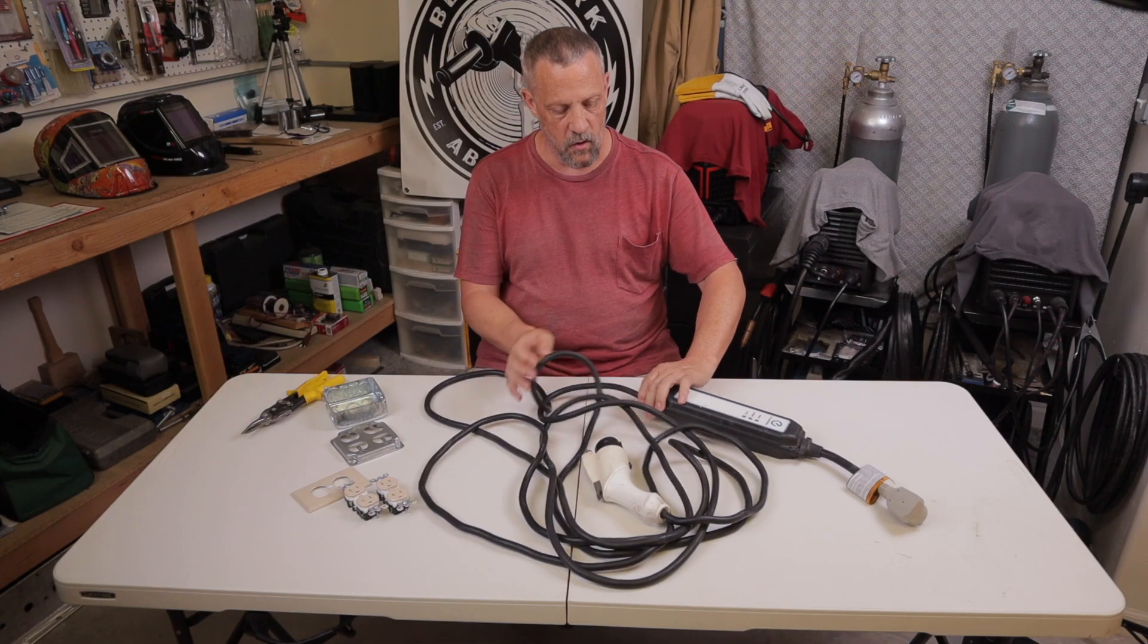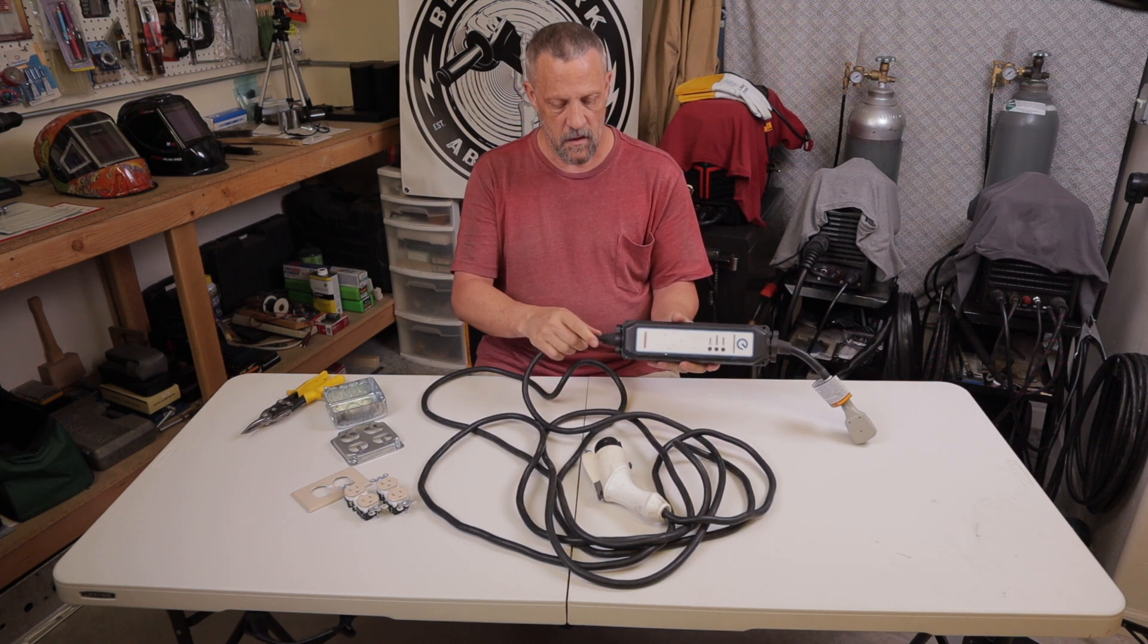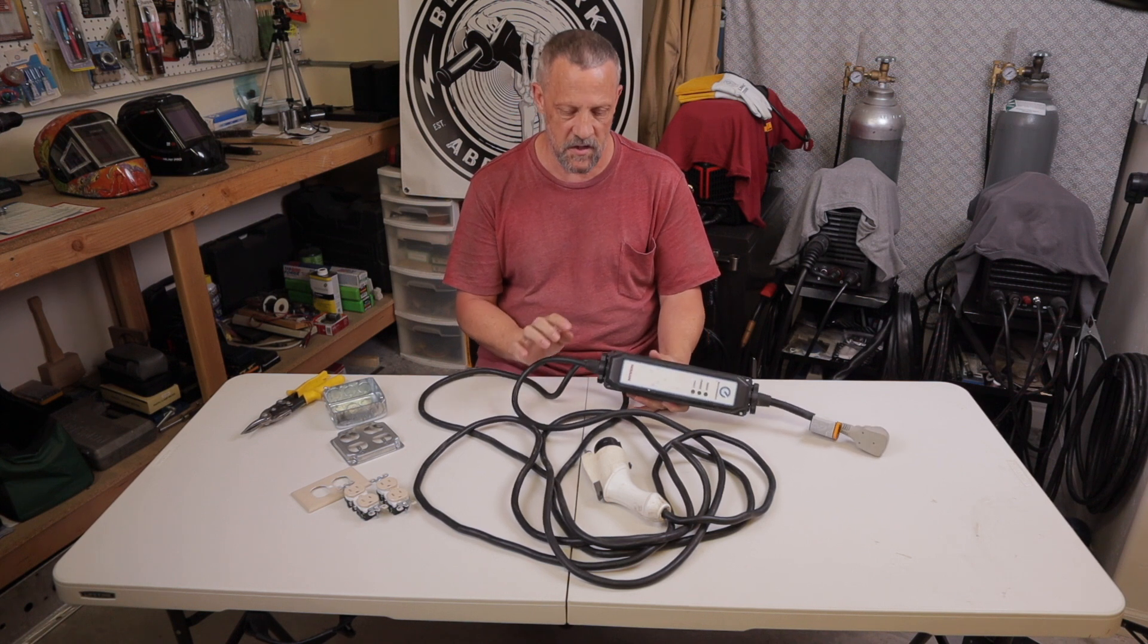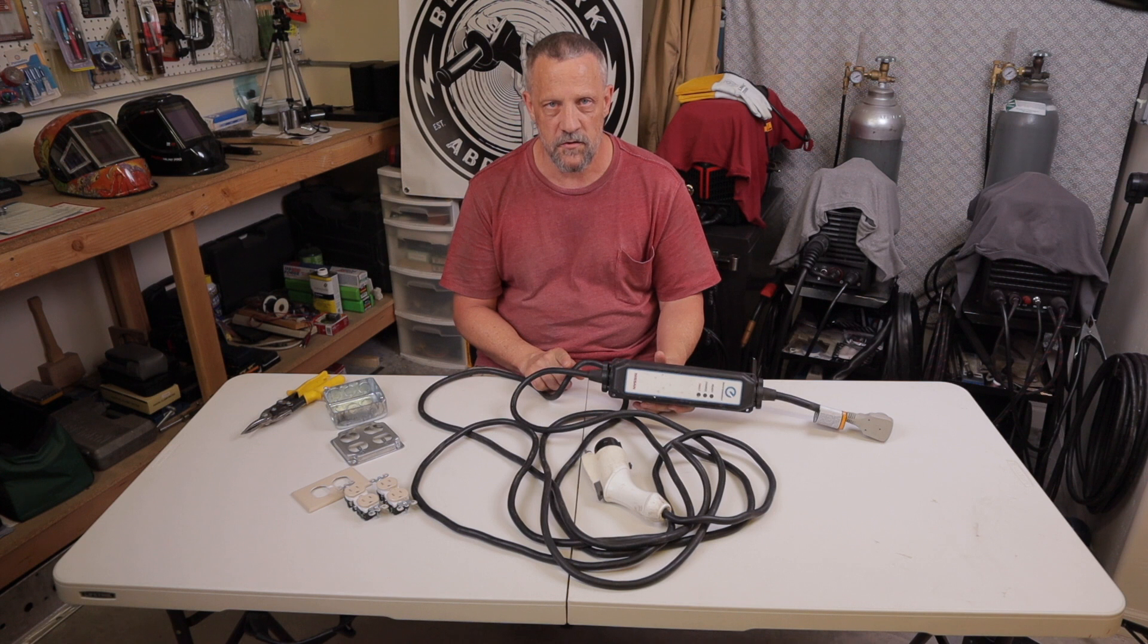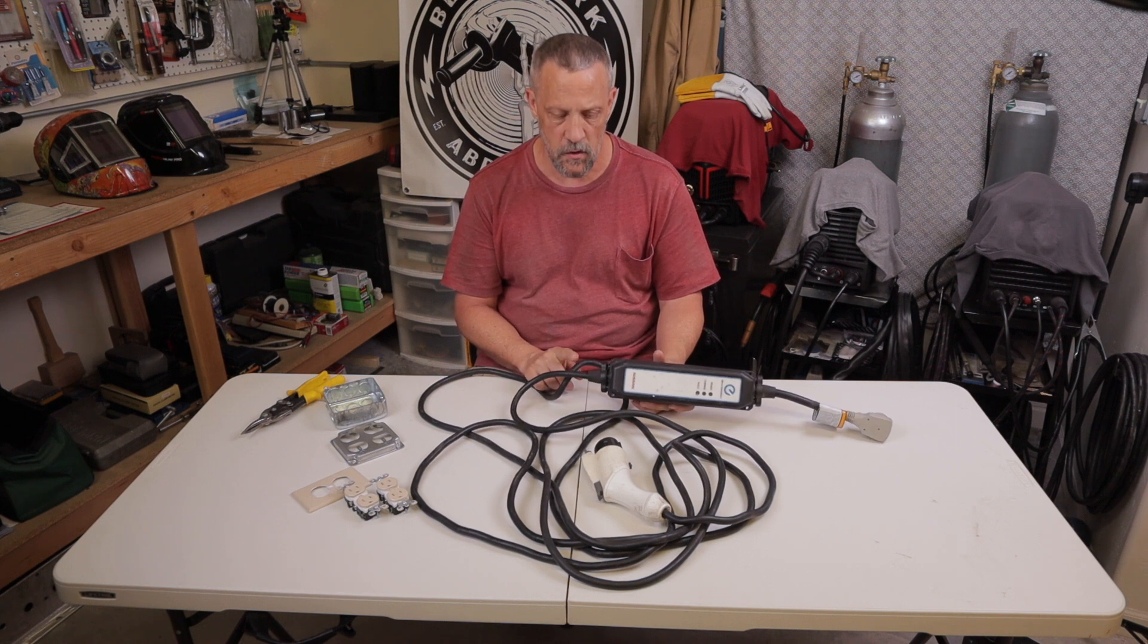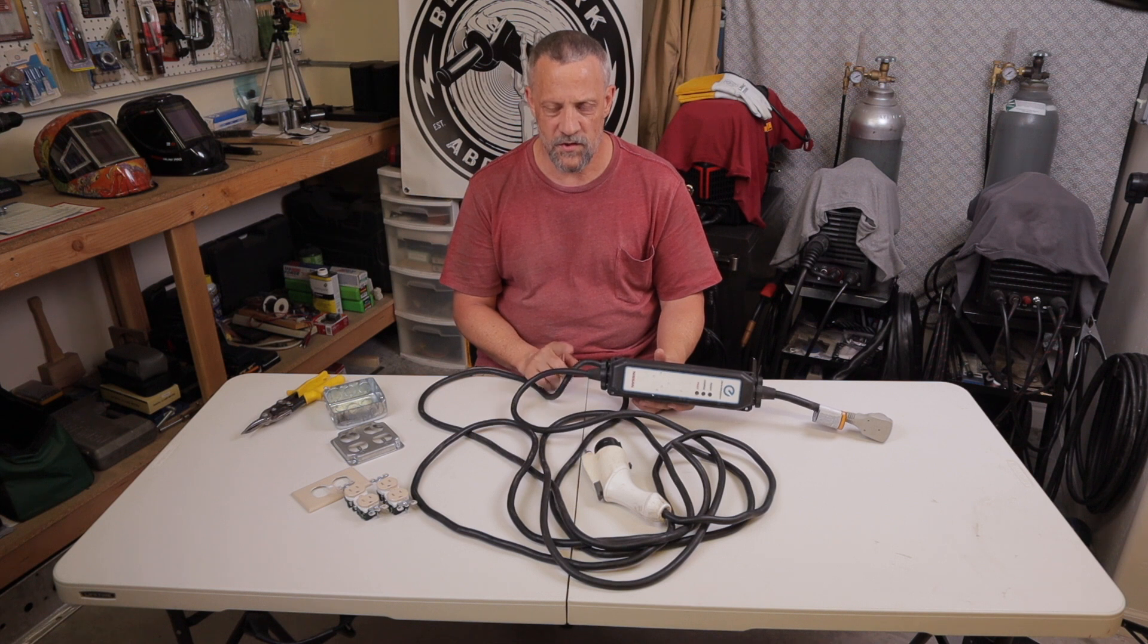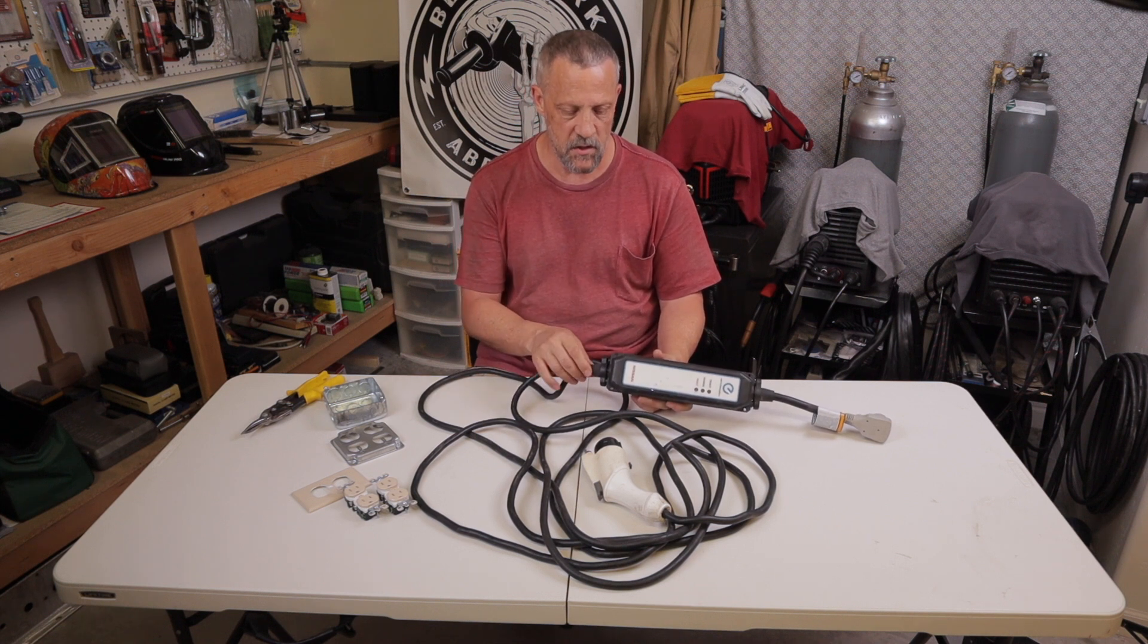I'm going to cut this cord off of the actual charger here and look and see what size wires and how many wires are in here. A normal extension cord usually has three wires: a ground, a hot, and a neutral. I think there's probably four or six wires inside here is my guess. We'll see. We'll see when I cut it open.